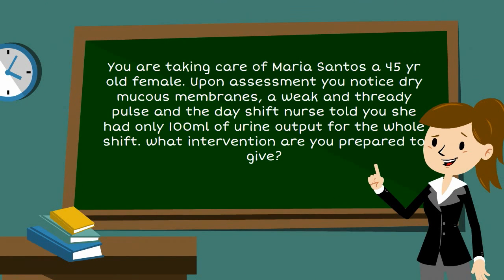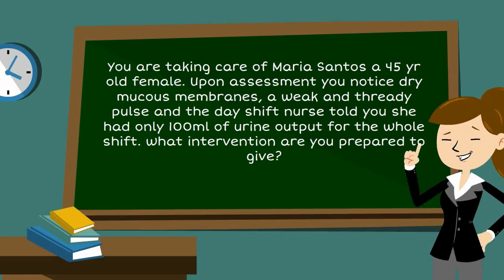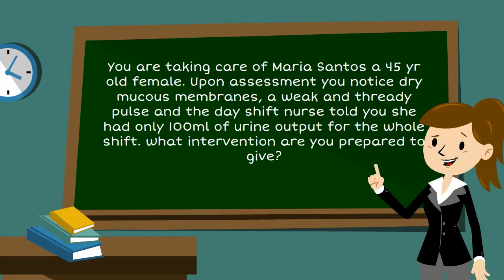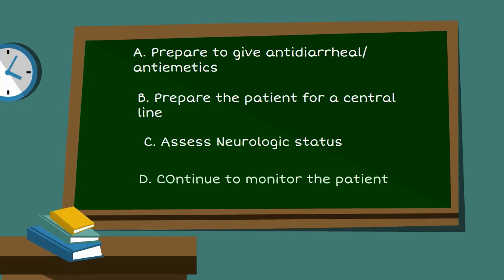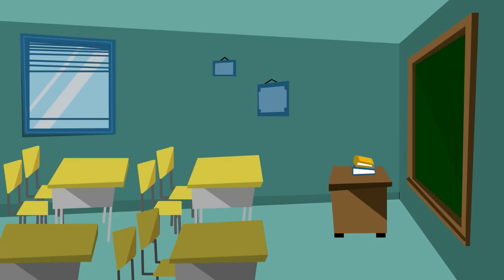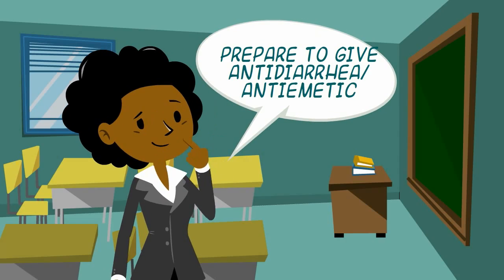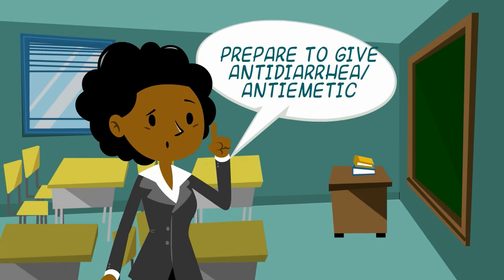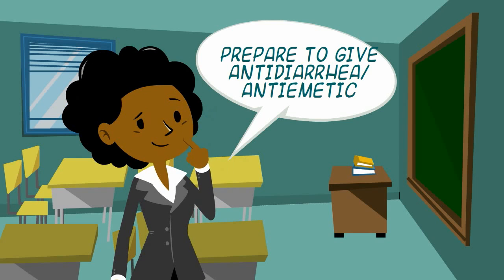Here's a critical thinking question: a patient presents with dry mucous membranes, weak and thready pulse, and low urine output — this is your classic fluid volume deficit patient. Interventions include: prepare to give anti-diarrheal and anti-nausea medications, prepare to start a central line, continue to monitor, or assess mental status. The best answer is to prepare to give anti-diarrheal and anti-nausea medications, because the assessment already confirms fluid volume deficit, and diarrhea and vomiting are known causes.